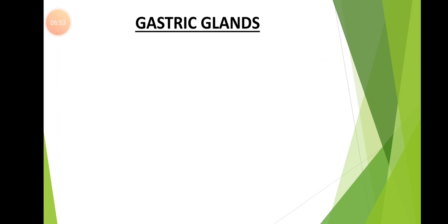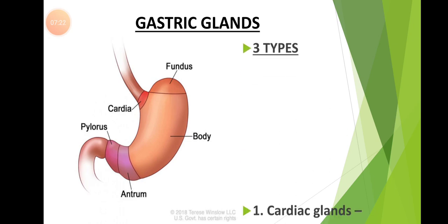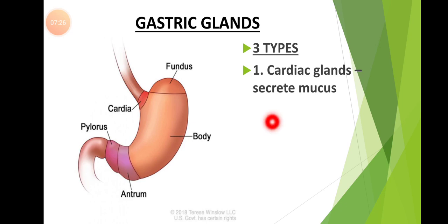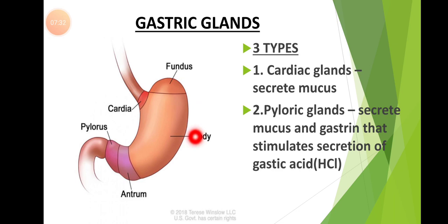Coming to the next gland — the gastric glands. The gastric glands are present in the walls of the stomach. As you already studied, the stomach is made up of three regions: the cardiac region, the fundic region, and the pyloric region. The cardiac region contains cardiac glands, and the fundic region contains fundic glands.